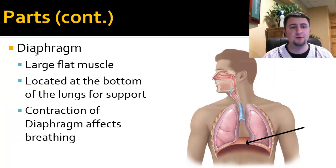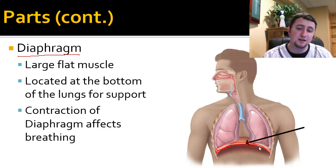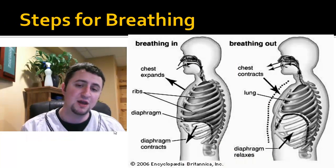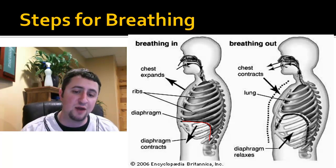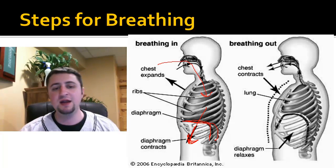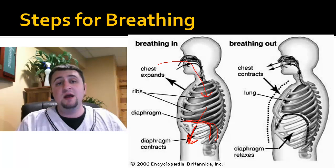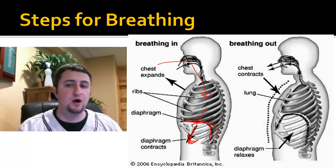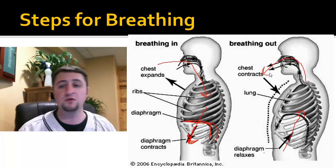The next part of the respiratory system is the muscle controlling the movement of air — it's called the diaphragm. It's a large flat muscle on the bottom of the lungs. When it contracts, it forces air into the lungs, and when it relaxes, it forces air out. When the diaphragm contracts, it pulls down on the lungs and forces air to go in. Your ribs also expand when you take a deep breath in, and then when the diaphragm relaxes, it pushes up on the lungs and forces the air out of your nose or mouth.